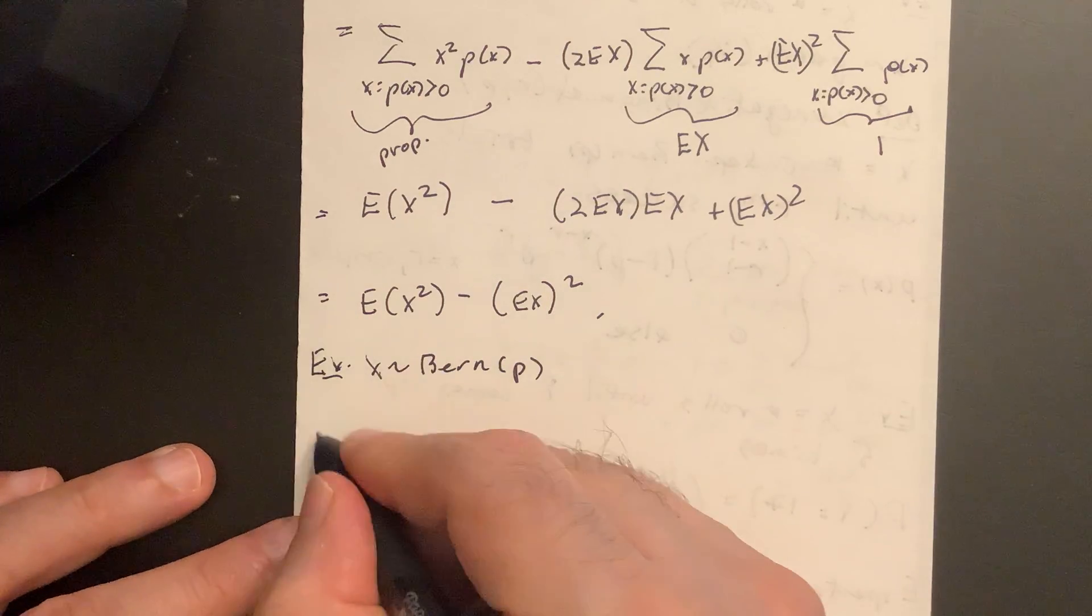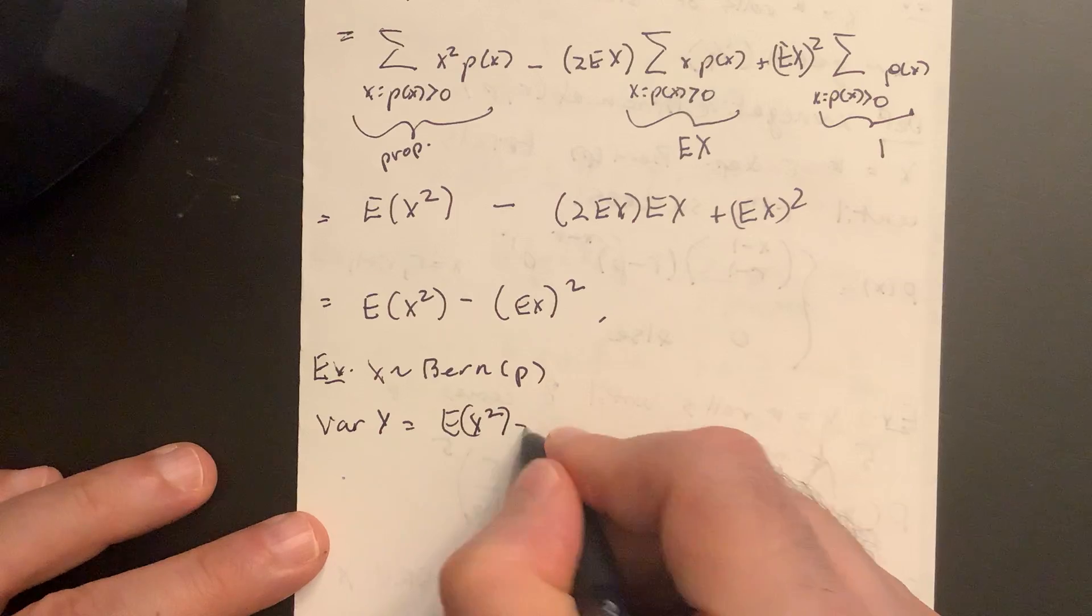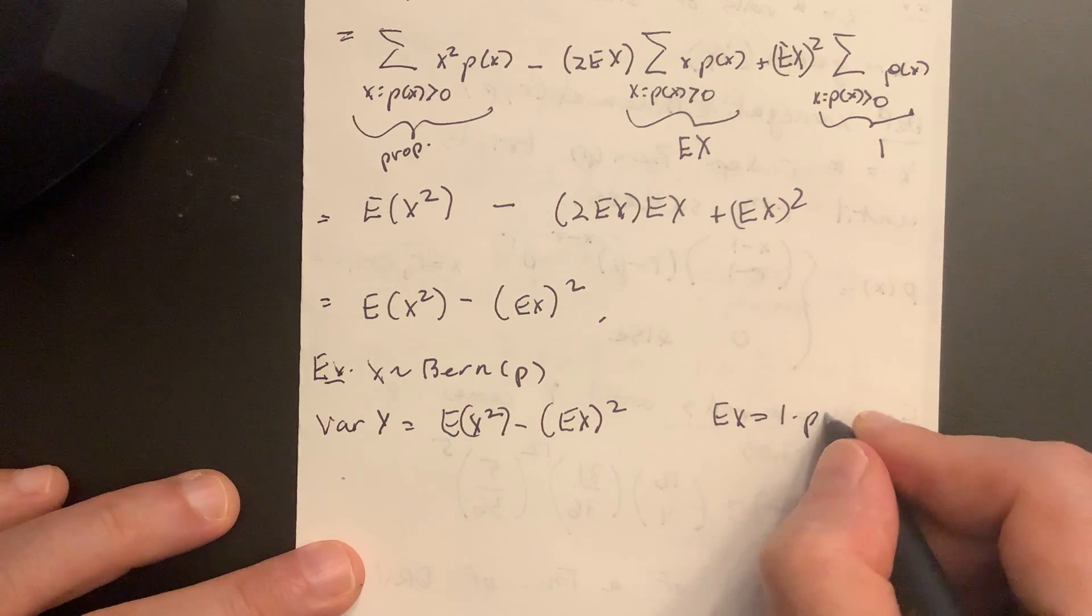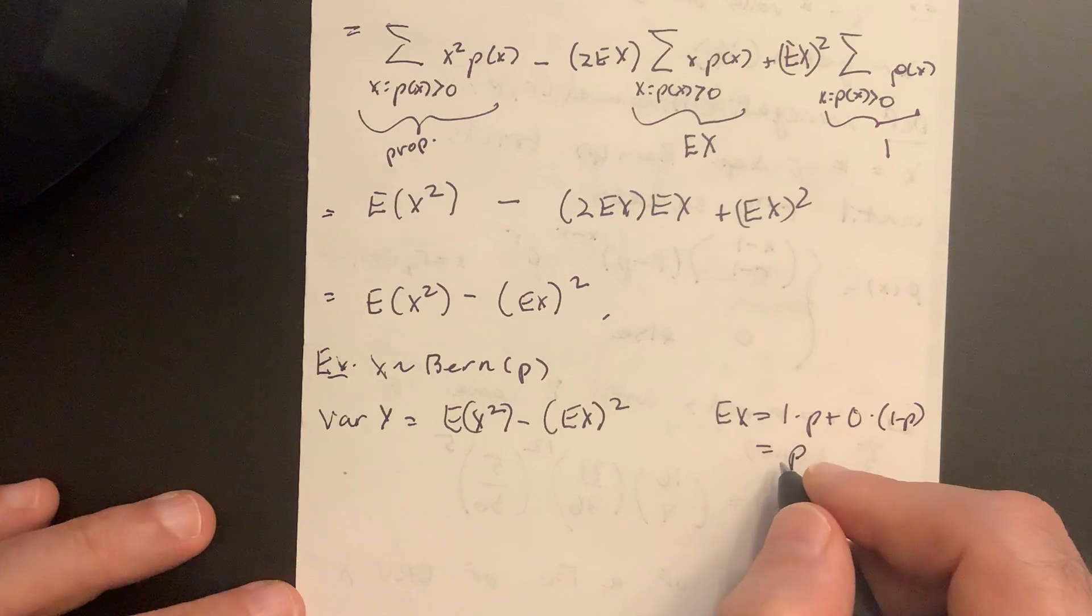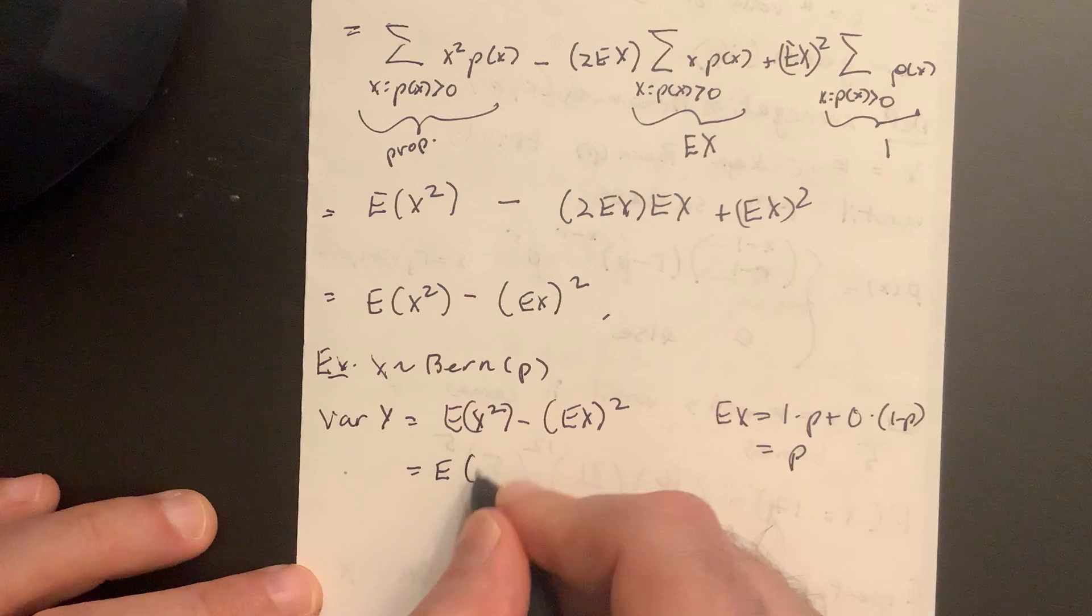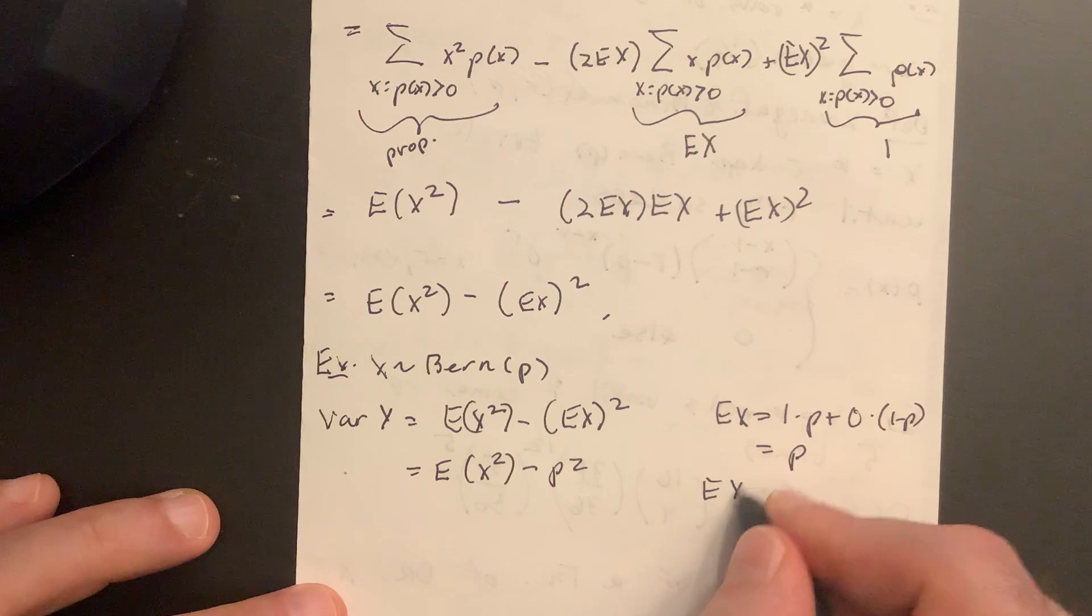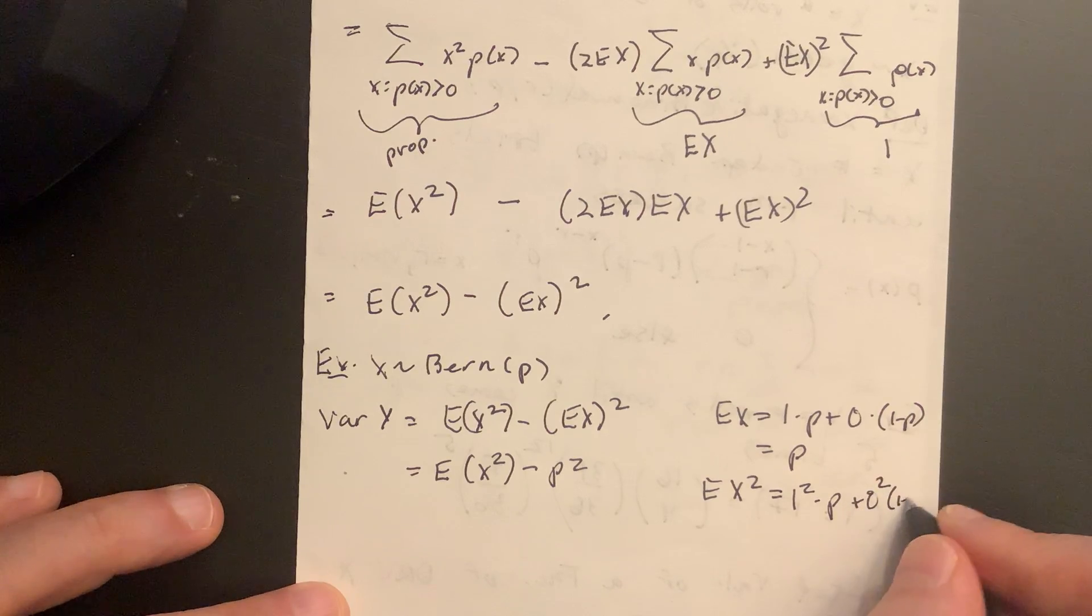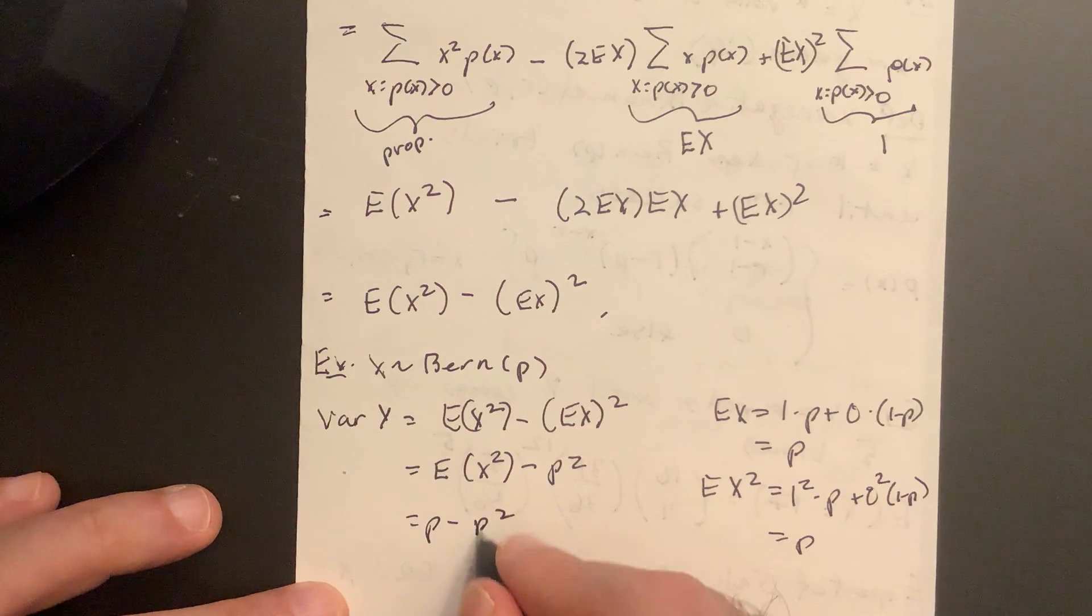Let's use this form. Variance of x equals E(x^2) - E(x)^2. We already found E(x): x equals 1 times p plus 0 times (1-p), so that's equal to p. So this is equal to E(x^2) - p^2. Now, E(x^2), using the proposition, 1^2 times p plus 0^2 times (1-p), it's just p. So I have p - p^2, sometimes written p(1-p) like that.